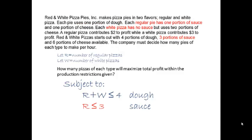Now look at sauce. Each regular pizza uses one portion of sauce, and the total sauce used must be three portions or less. So one R must be less than or equal to three. White pizza doesn't use sauce, so W does not appear in the sauce constraint.